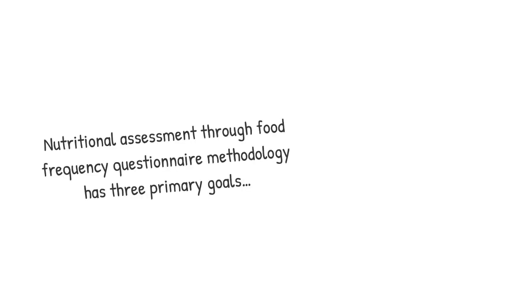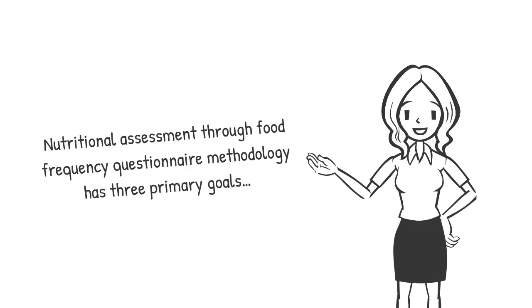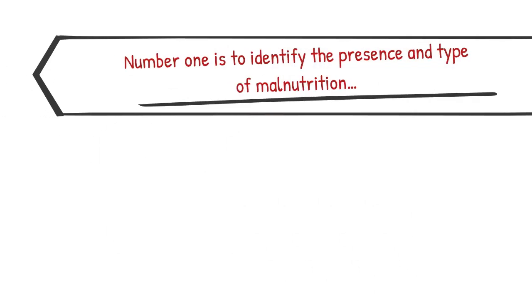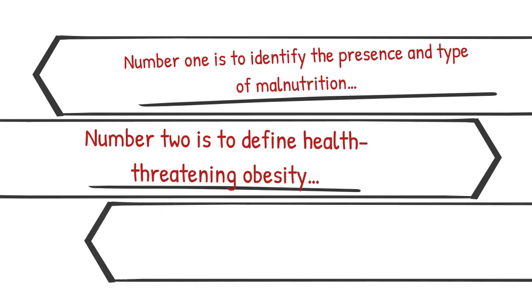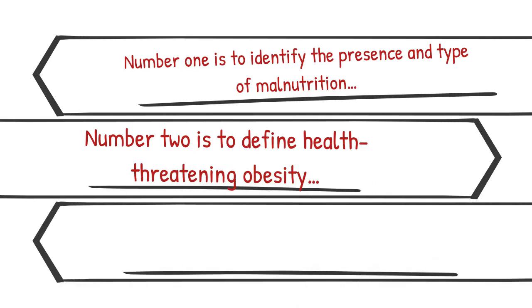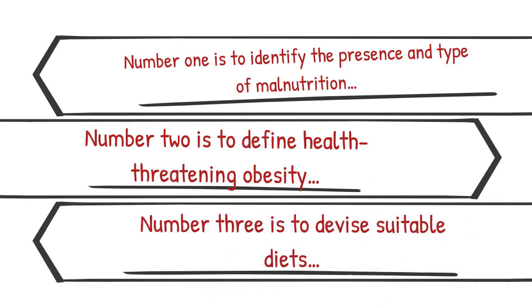Nutritional assessment through food frequency questionnaire methodology has three primary goals: number one is to identify the presence and type of malnutrition; number two is to define health-threatening obesity; and number three is to devise suitable diets.